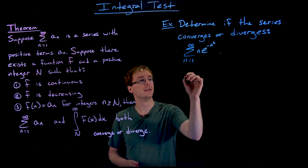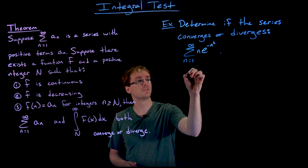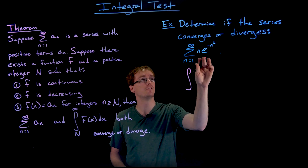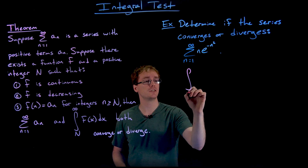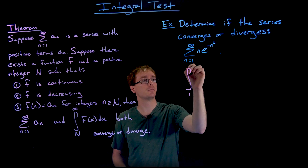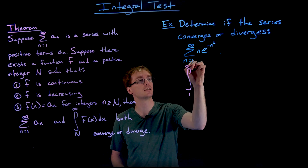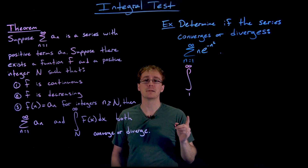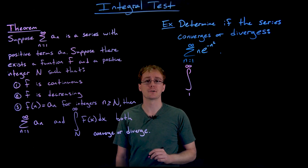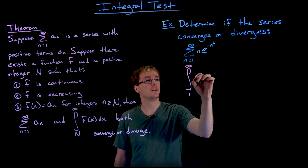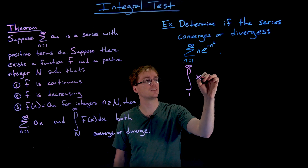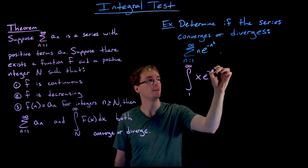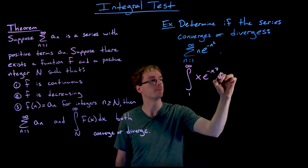So now we can test the convergence or divergence of this series just by computing a single improper integral, and that will be the improper integral from 1 to infinity of x times e to the negative x squared.